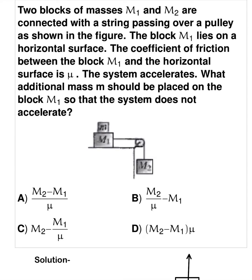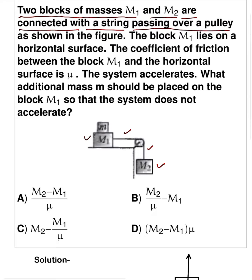Now, corresponding to this question, first read the problem. Two blocks of mass M1 and M2, connected with a string passing through a pulley as shown in the figure. The block M1 lies on a horizontal surface. The coefficient of friction between block M1 and the horizontal surface is mu.